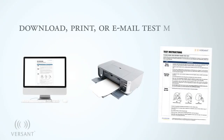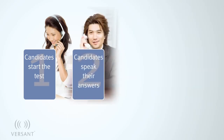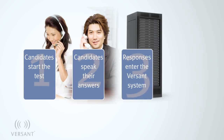After the test administrator logs into Versant's system to download test papers and instructions, the testing process takes just four simple steps. First, when candidates are ready, they start the test by computer or telephone. Second, each candidate speaks their answers as the Versant voice prompt guides him or her through the test. Third, the candidate's spoken responses enter the patented Versant scoring system for analysis. This only takes a few minutes.